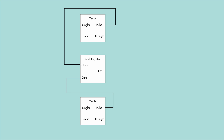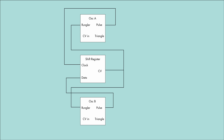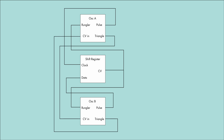Oscillator A's pulse output clocks the shift register, while oscillator B's pulse output provides data to the shift register. The last three digital outputs from the shift register pass into a simple digital-to-analog converter and are turned into stepped voltages, which Hordyke describes as a stepped havoc wave. This stepped CV is routed back into both the clock and data oscillators, modulating their frequency and creating a feedback loop. The two oscillators also cross-modulate each other, creating a second feedback loop.